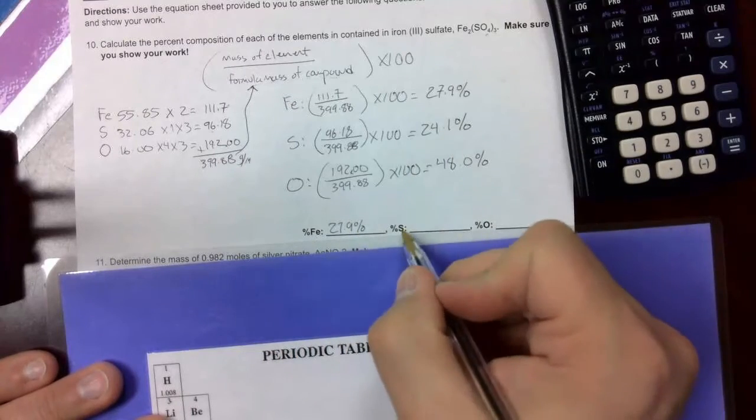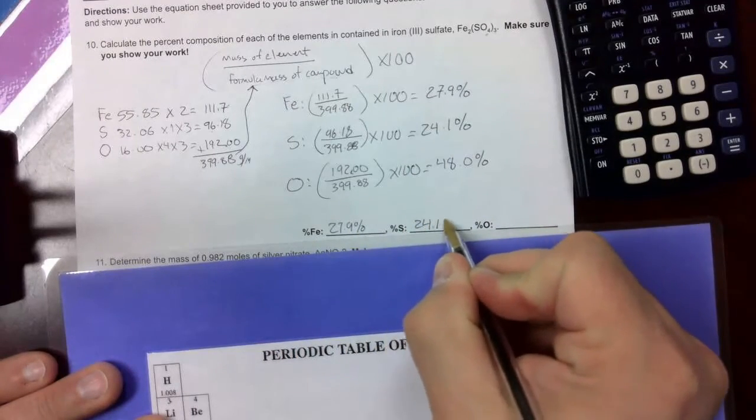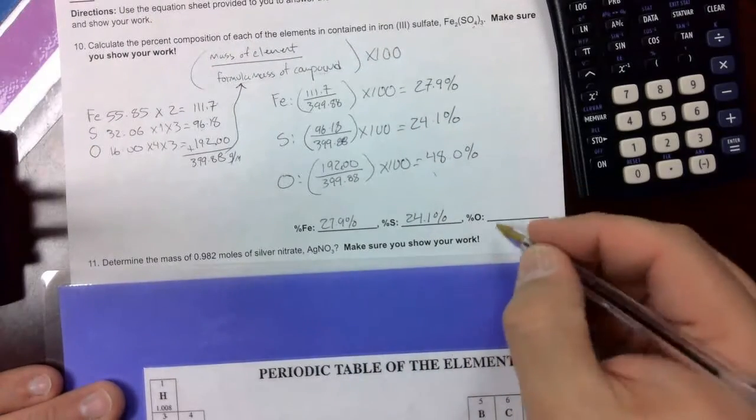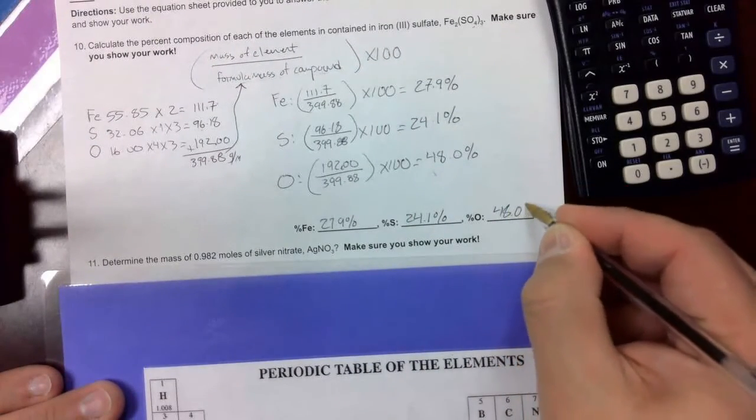And that's what we're going to list for our percent composition. For iron, 27.9. For sulfur, 24.1. And for oxygen, almost half, 48.0%.